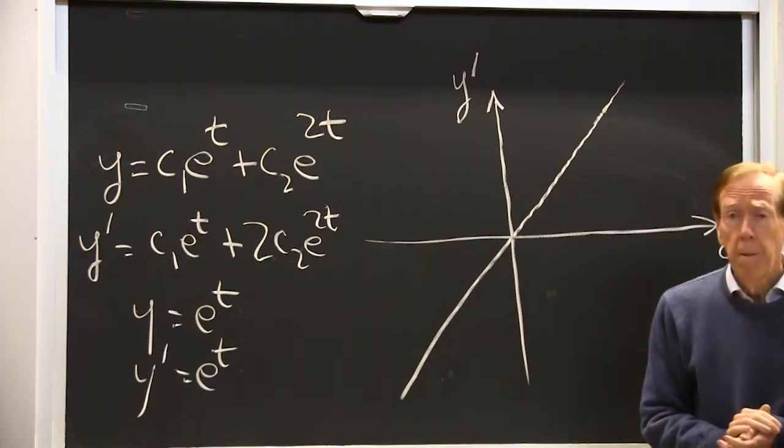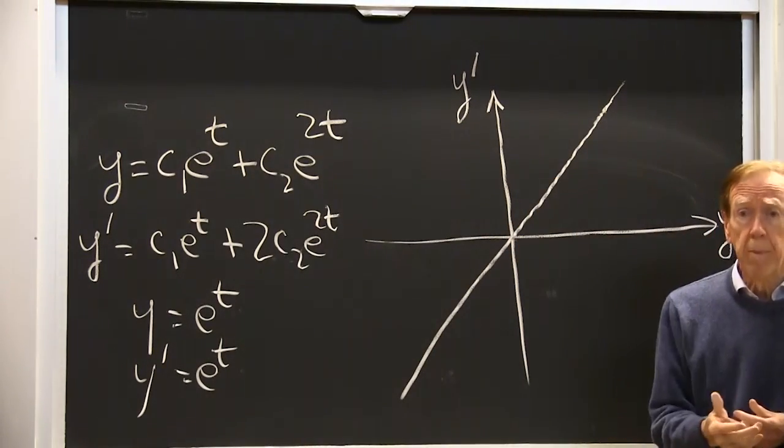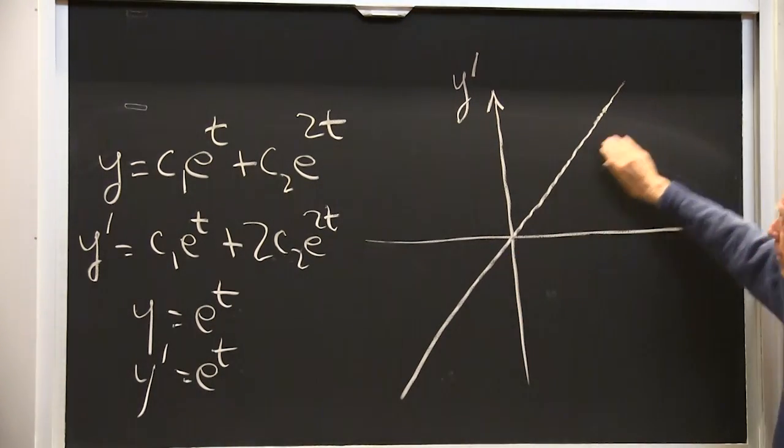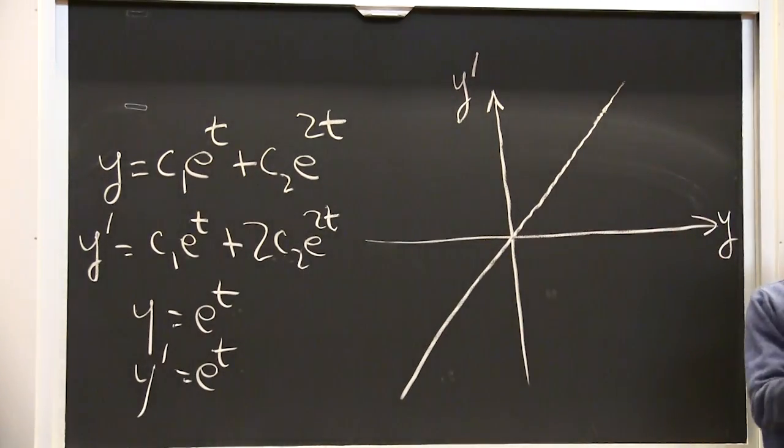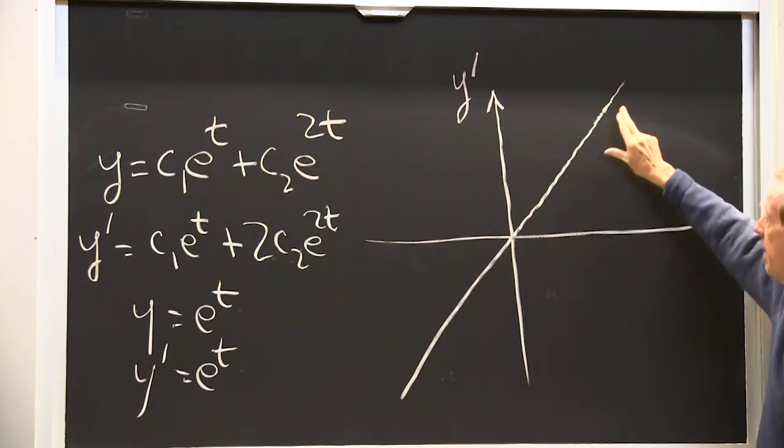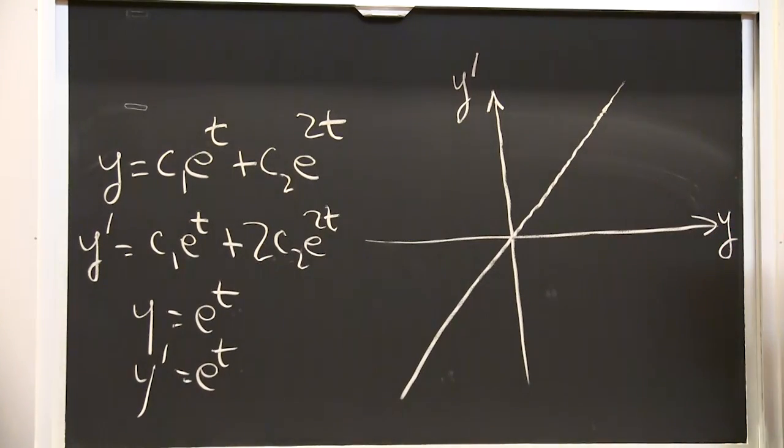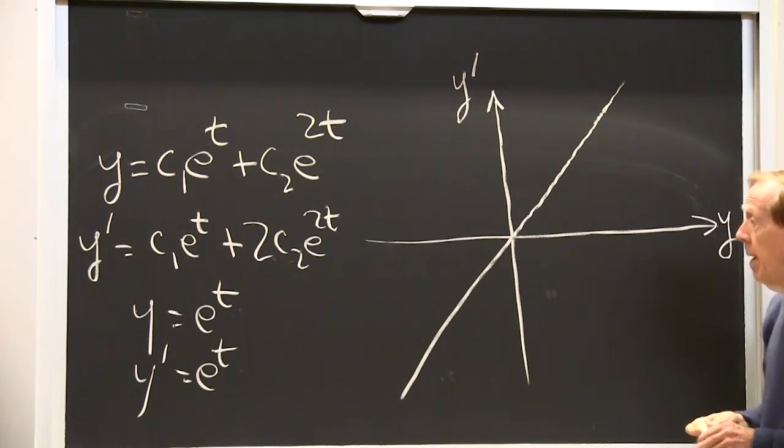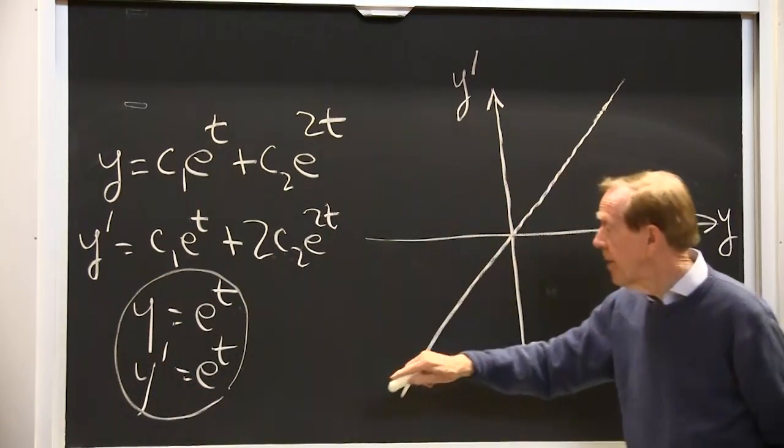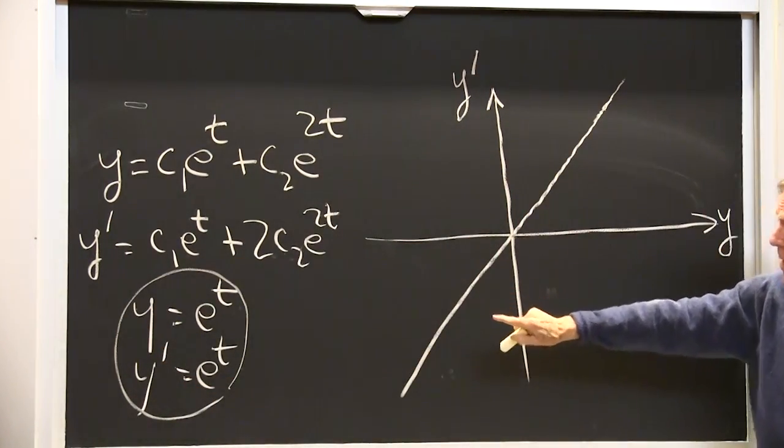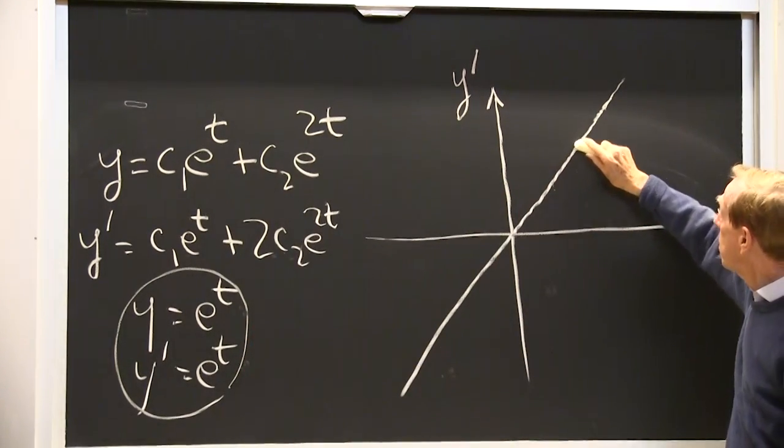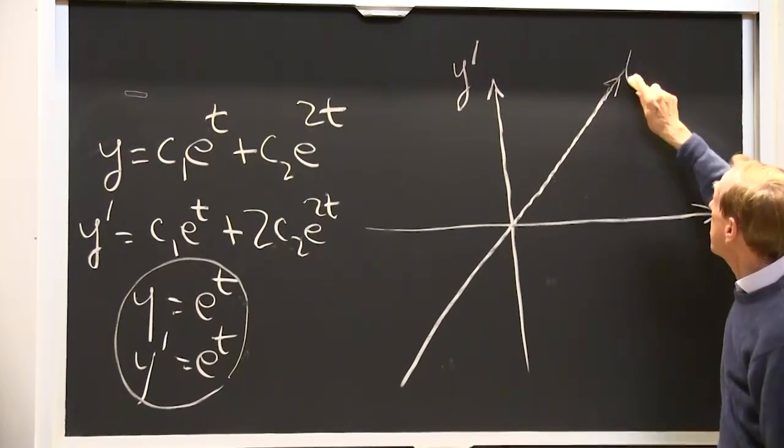What kind of a picture do I have in the phase plane, in the y, y prime plane? Those are equal. So y equals y prime for that solution. y equals y prime along the 45 degree line. What's happening on this 45 degree line? The solution is going straight out the line.